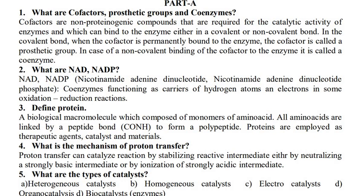First question: what are cofactors, prosthetic groups and coenzymes? Cofactors are non-proteinogenic compounds that are required for the catalytic activity of an enzyme, and which can bind to the enzyme either in a covalent or non-covalent bond. When the cofactor is permanently bound to the enzyme via a covalent bond, it is called a prosthetic group. In case of non-covalent binding, the cofactor is called a coenzyme.